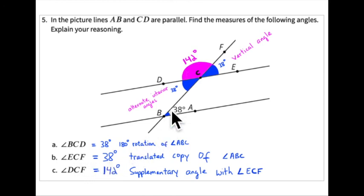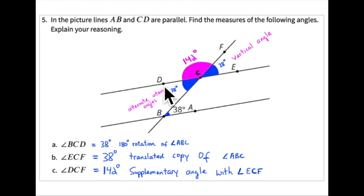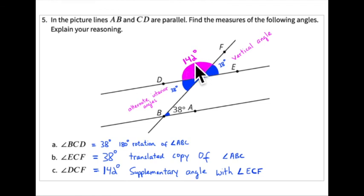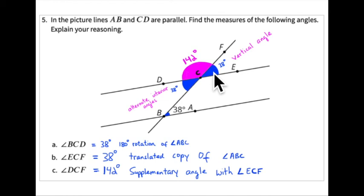Since angle BCD is 38 degrees, angle ECF must also be 38 degrees because it is a vertical angle — angles across an intersection are always equal. Finally, angle DCF lies on a straight line with the 38-degree angle, so they are supplementary and must add to 180 degrees. Therefore angle DCF is 142 degrees. The vertical angle to DCF is also 142 degrees, and 142 plus 38 equals 180 degrees — a straight line is 180 degrees around.